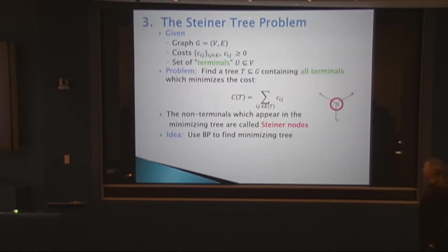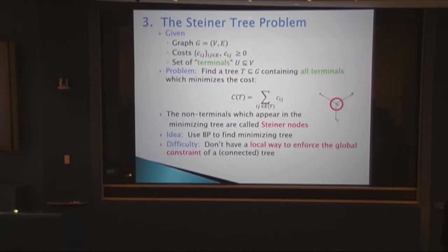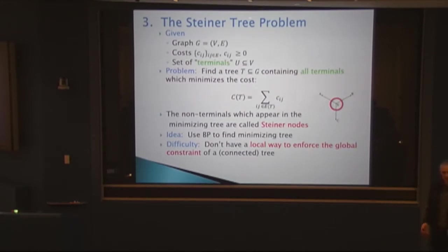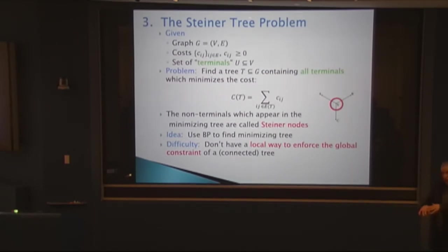The Steiner tree problem is NP-complete, so we want to use belief propagation to approximately solve it. The challenge is that BP works nicely with local constraints, but the Steiner tree has a global constraint — connecting all terminals involves all edges simultaneously. Writing one big constraint over all edges makes the messages super complicated.